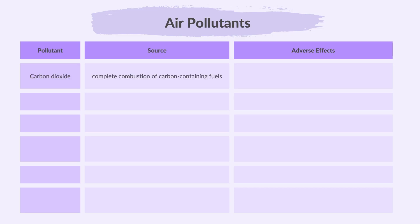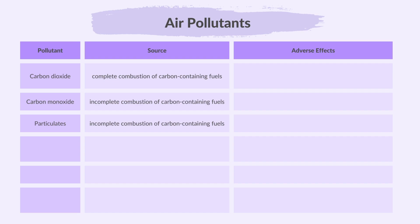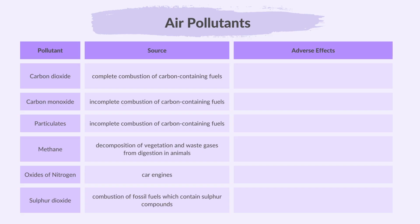Carbon dioxide comes from the complete combustion of carbon-containing fuels. Carbon monoxide and particulates come from the incomplete combustion of carbon-containing fuels. Methane comes from the decomposition of vegetation and waste gases from digestion in animals. Oxides of nitrogen are from car engines. Sulfur dioxide comes from the combustion of fossil fuels which contain sulfur compounds.